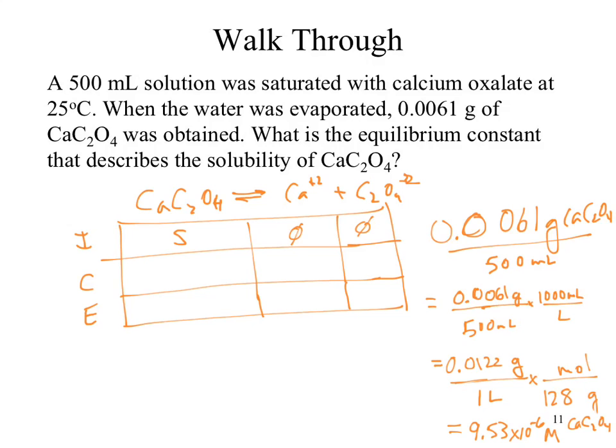It dissociates into the ions, right? Which means our products go up by some amount and our reactants go down by some amount. Our reactant dissolved to what extent? What we're looking at in that change is how much dissolved in units of molarity. How much was dissolved in that solution? 9.53 times 10 to the minus 6 moles per liter of calcium oxalate dissolved in that solution, which means our S value is that number. What's the relationship between our S and X? It's exactly one to one.